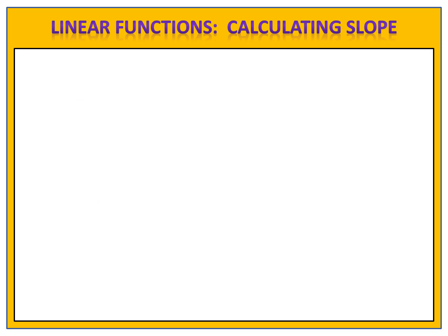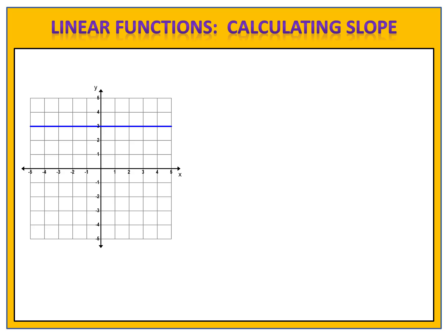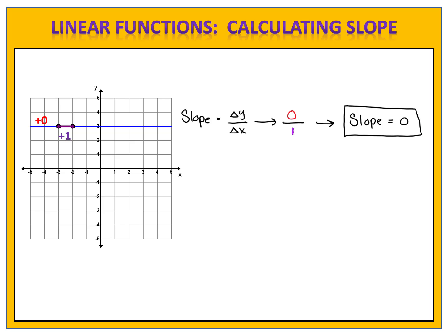There are a couple of special cases that we should look at. The first is that of a horizontal line. We want to calculate the slope — the change in y over the change in x. We identify the lattice points and choose two of them. The y value didn't change at all; on both points the y value is three, so the change in y is zero. The x value went from negative three to negative two, increasing by one, so the change in x is one. Zero divided by one is simply zero, so the slope of a horizontal line is zero.